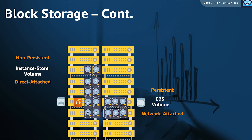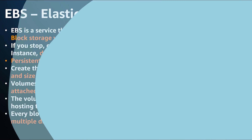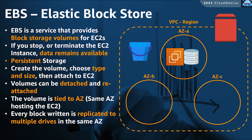EBS volumes are persistent. EBS is a persistent block storage service from AWS. You create EBS volumes and attach them to your EC2 instance. For every volume, you need to choose the appropriate volume size and type. We have multiple types that offer different performance levels at different prices. A volume is created within one AZ, typically the same AZ where your EC2 instance exists.